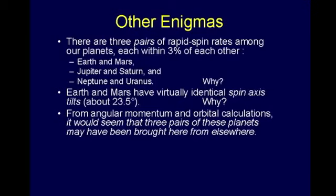What this leads to is a belief by some cosmologists that, from the angular momentum issues and orbital calculations, three pairs of these planets may have been brought here from elsewhere. How might that have happened? A comet with a lot of mass in some other system might catch two planets in that system, and as it passes by here, deposit them. There are mathematics that would suggest that, and it would seem that on three different occasions a pair did this.